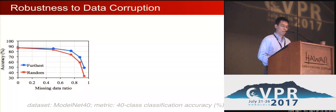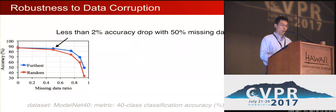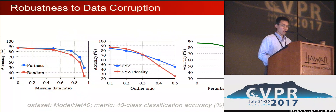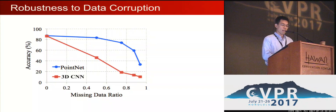Besides strong performance in 3D recognition, PointNet is also very robust to data corruption. While trained on 1,024 points, at test time we can randomly drop points and see how classification accuracy suffers. Remarkably, even after dropping 50% of the points, accuracy drops only by 2%. Our network is also very robust to outlier points and point perturbations. Compared with the baseline 3D CNN, we see that PointNet is much more robust in dealing with missing points, even though neither PointNet nor the 3D CNN saw any incomplete data during training.